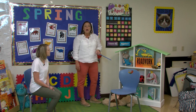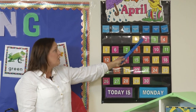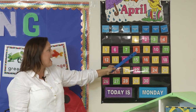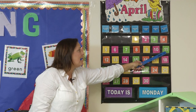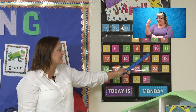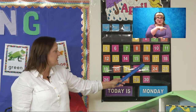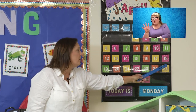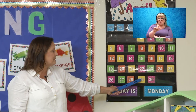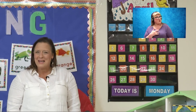Let's see if we can count how many days are in April. Count with me. One, two, three, four, five, six, seven, eight, nine, ten, eleven, twelve, thirteen... twenty, twenty-one, twenty-two, twenty-three, twenty-four, twenty-five, twenty-six, twenty-seven, twenty-eight, twenty-nine, thirty. Good job. If anybody has a birthday in April, happy birthday to you.